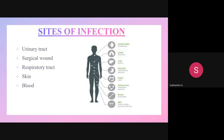Sites of infection include the urinary tract, leading to UTIs such as cystitis (bladder), urethritis (urethra), pyelonephritis (kidney), and vaginitis (vagina). If bacteria enter a surgical wound, it may cause surgical site infections: superficial incisional SSI, deep incisional SSI, and organ/space SSI.